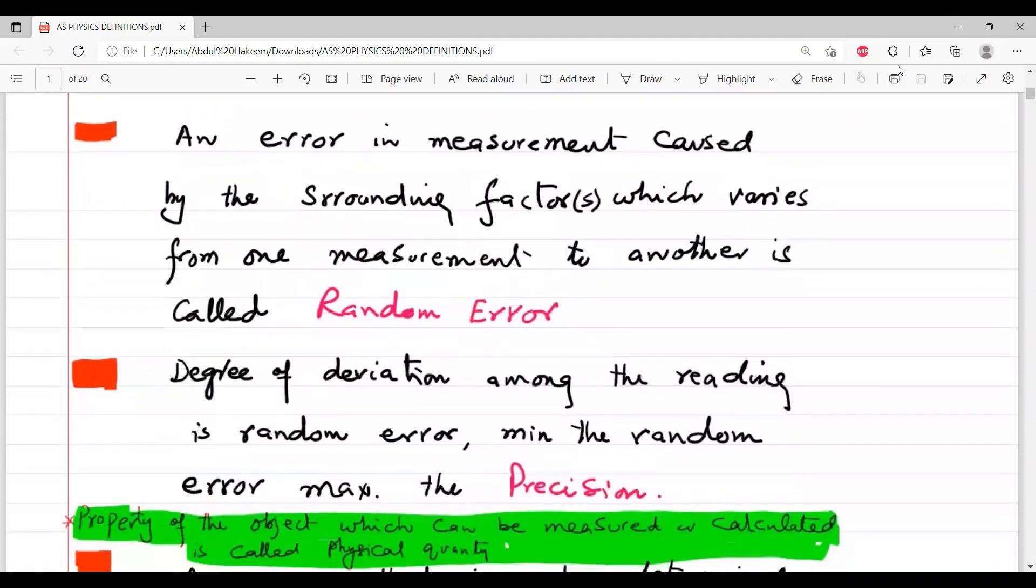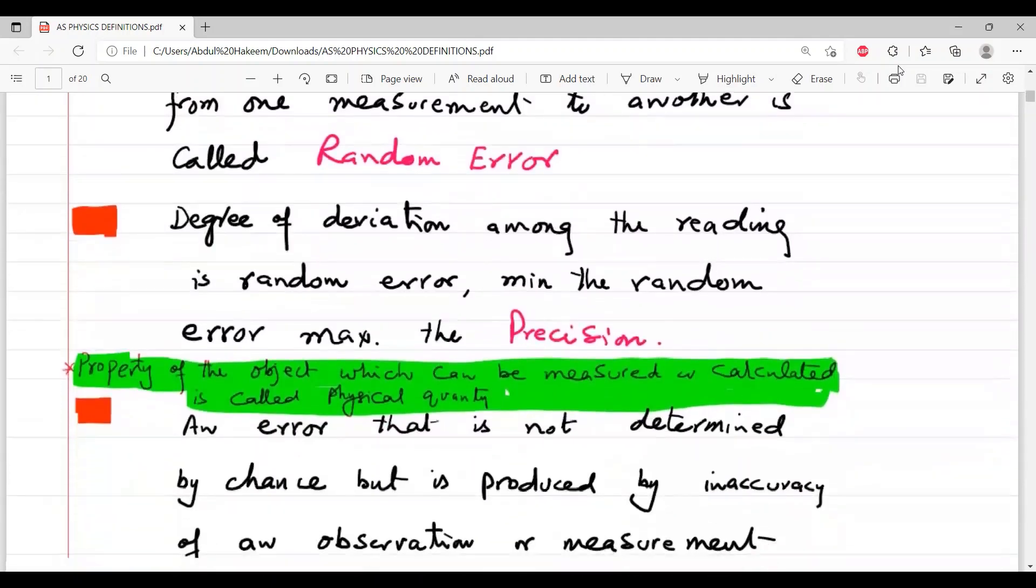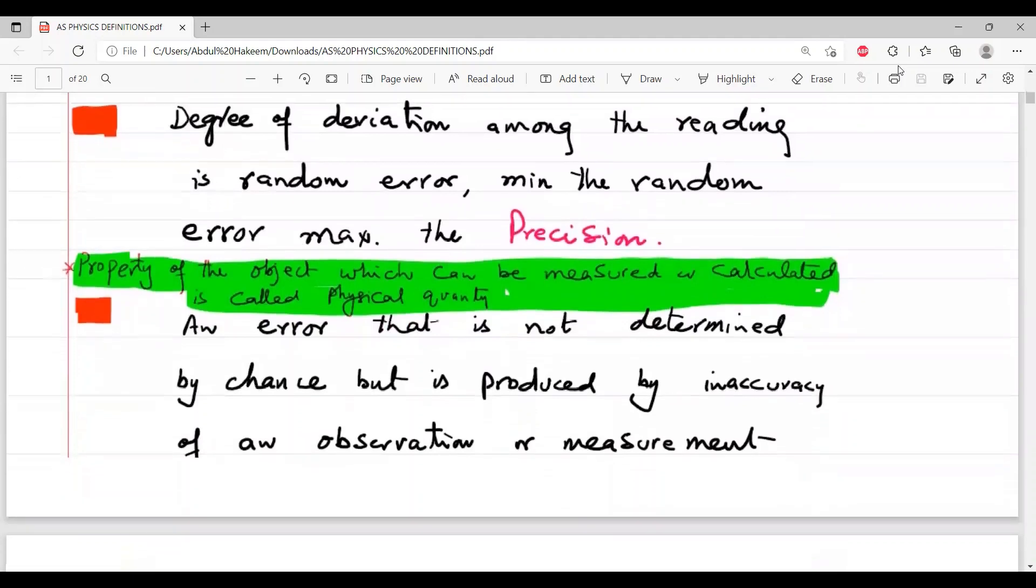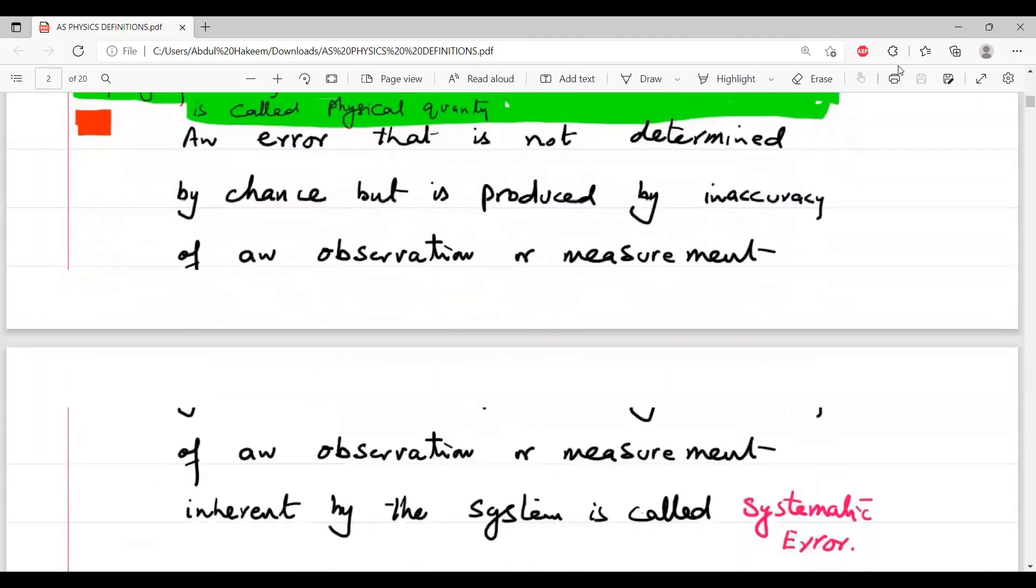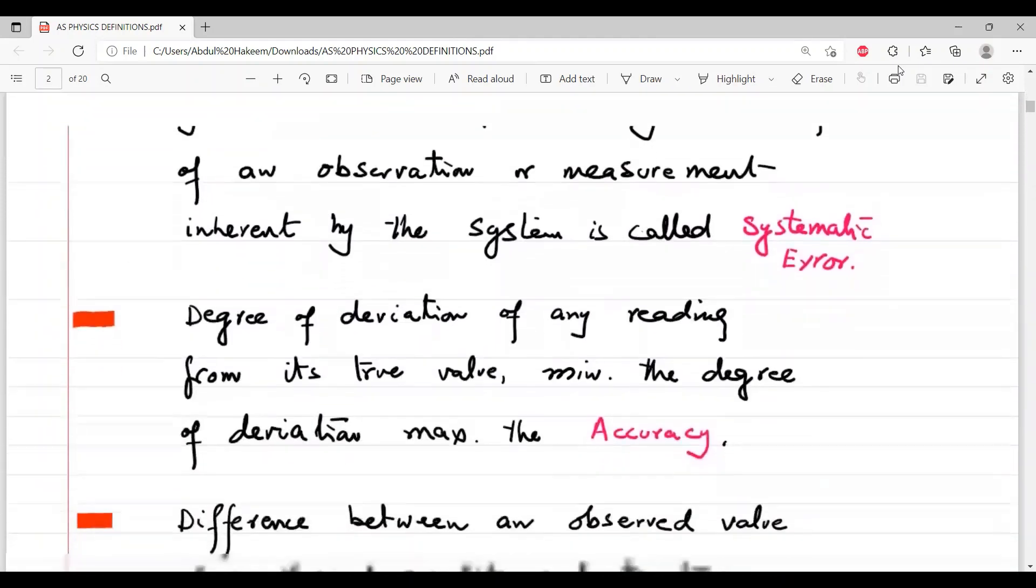Then precision, and here in the green this is the definition of the physical quantity, and the next is about the systematic error, next is the accuracy.